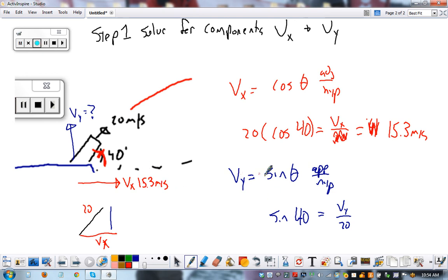To find Vy, we use sine theta, opposite over hypotenuse. So this becomes 20. We move that over there, sine 40. And that becomes 12.8 meters per second. So we know this upward is 12.8 meters per second. That's part one.